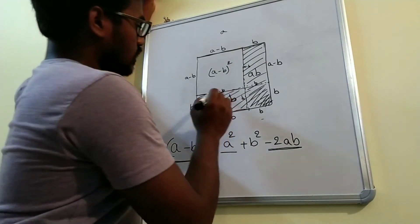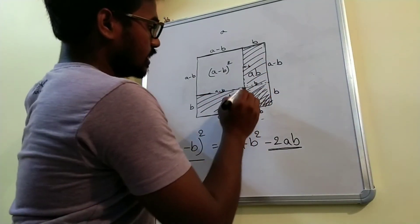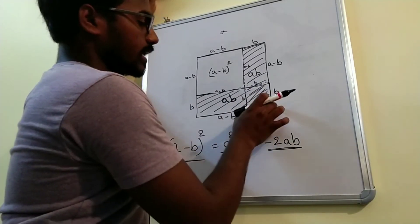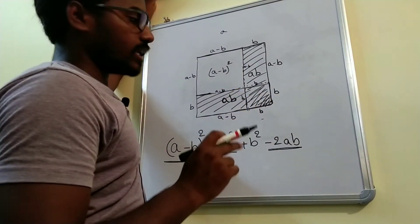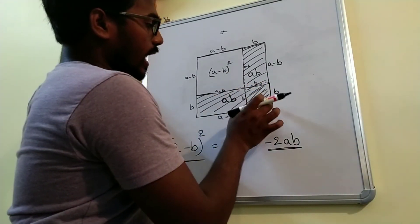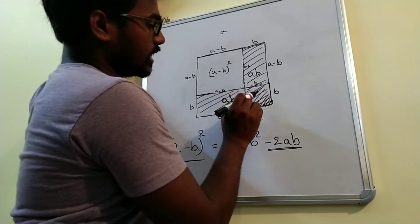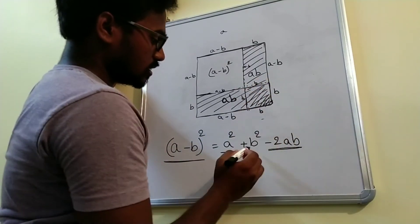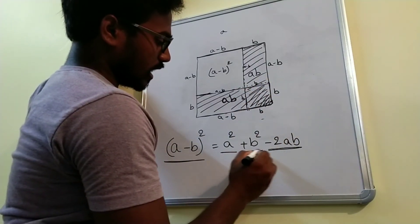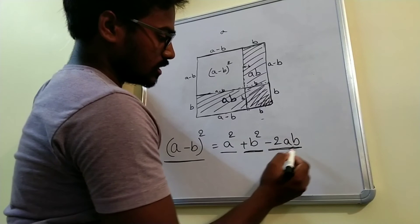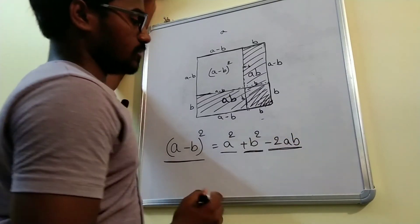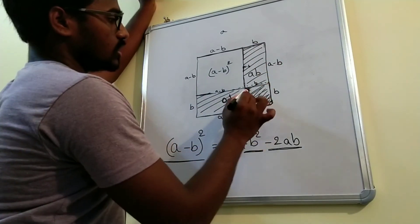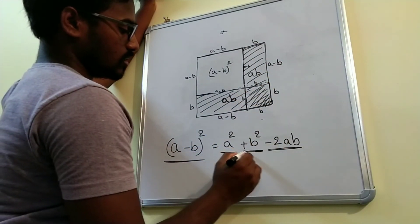If you observe, while subtracting these two rectangles, this area which is b squared — we are subtracting it two times, but we should not subtract it two times. So we will add this area once. What is the area of this box? This is b square. So we will add this box once — that is b square — as we are subtracting it two times in the minus 2ab formula. We are subtracting this area and also again this area, so we are subtracting two times. So we are adding it back once.